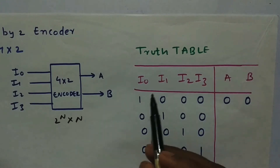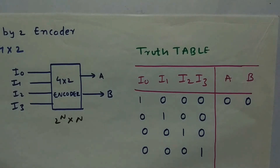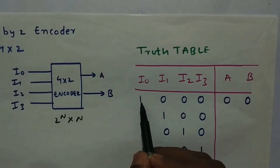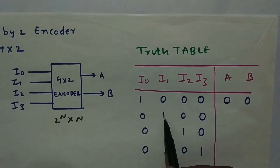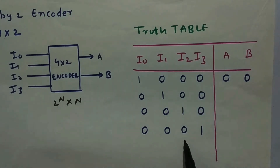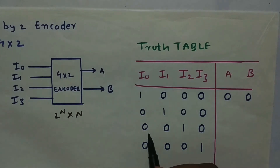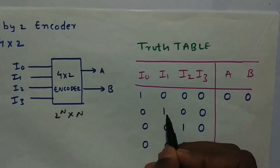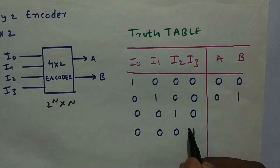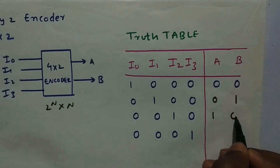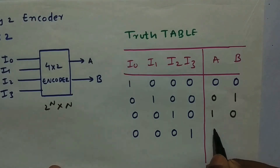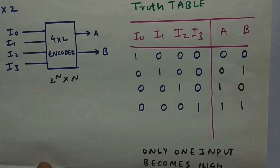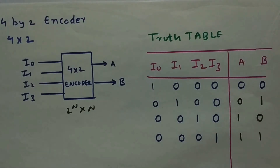The truth table has inputs I0, I1, I2, I3 and outputs A and B. For 4 inputs we could have 16 combinations, but the encoder works only when one input is high at a time. When I0 is high, A and B are both 0. When I1 is high, output is 0 and 1. When I2 is high, output is 1 and 0. When I3 is high, output is 1 and 1.